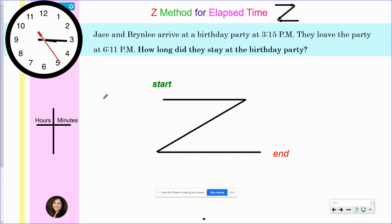We are going to talk about using the Z method for elapsed time. Elapsed time is the amount of time that passes from the start of an event to its ending. The Z method is one way to calculate the time that has passed. This method breaks down the minutes to the nearest hour.